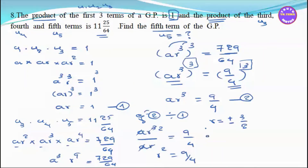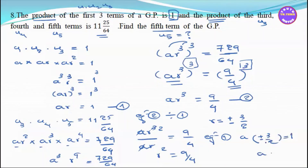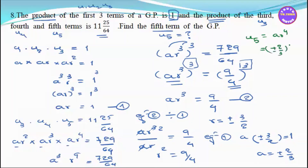Since r² = 9/4, we take r = plus or minus square root of 9/4 = plus or minus 3/2. So r = ±3/2. Using equation 1 with a and r = ±3/2 to find 'a'.